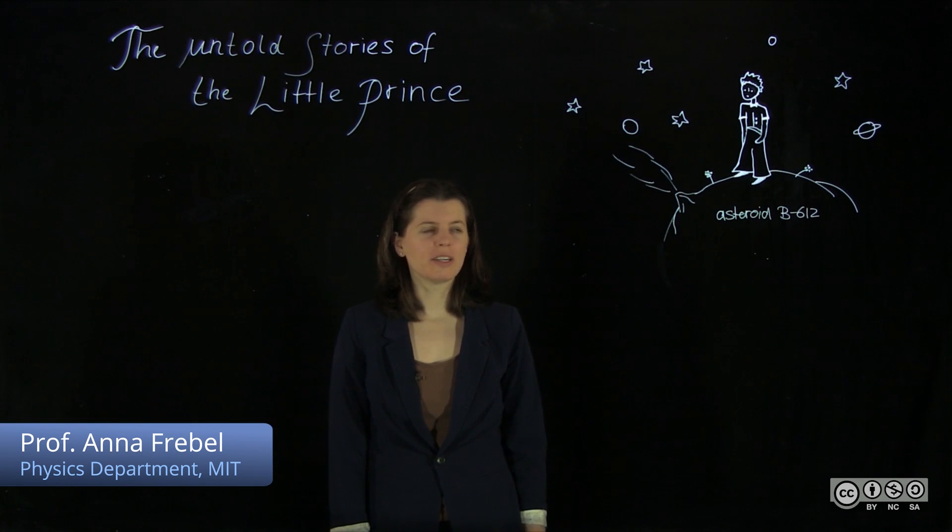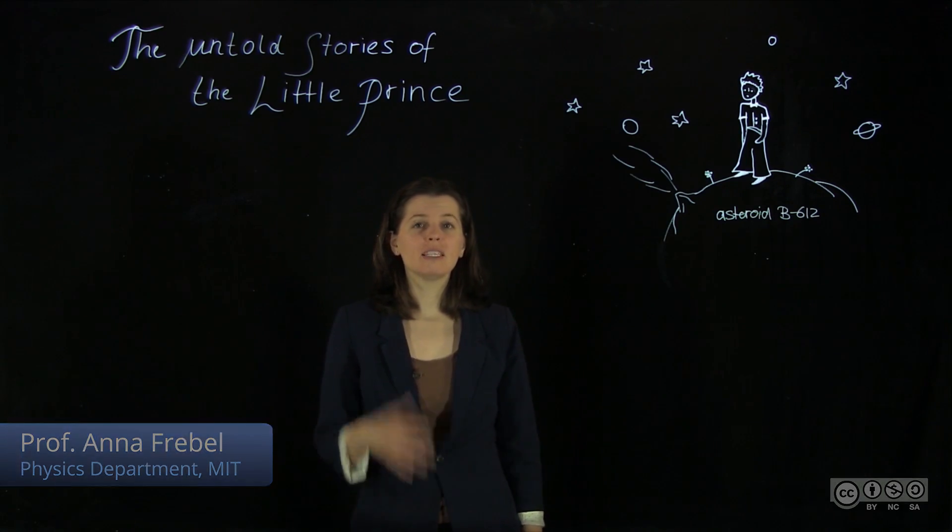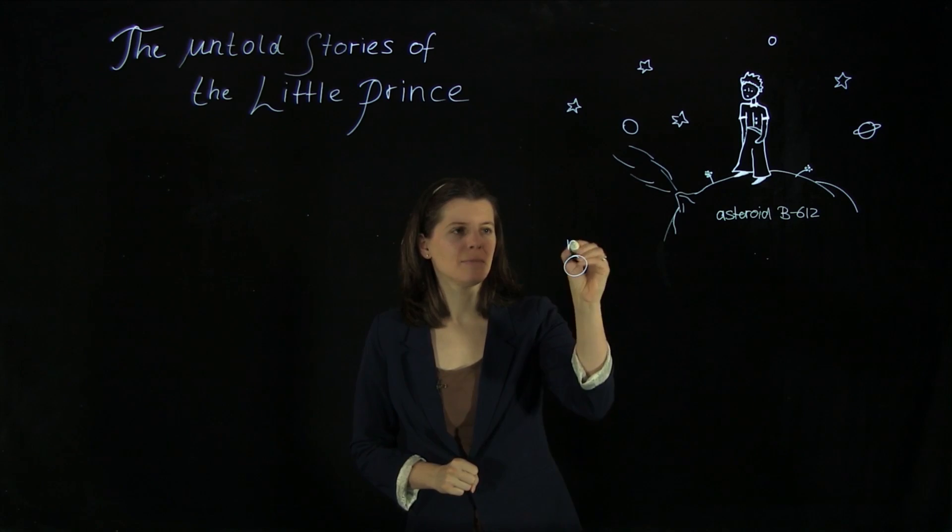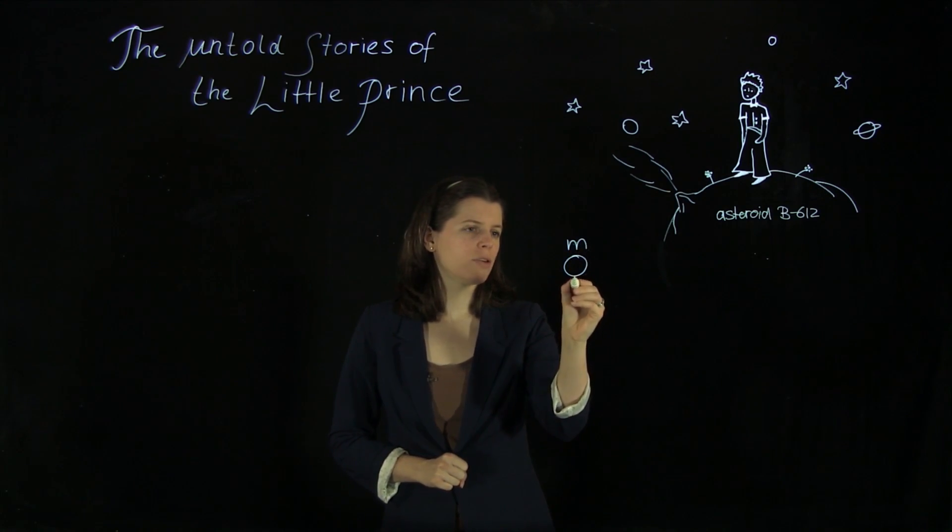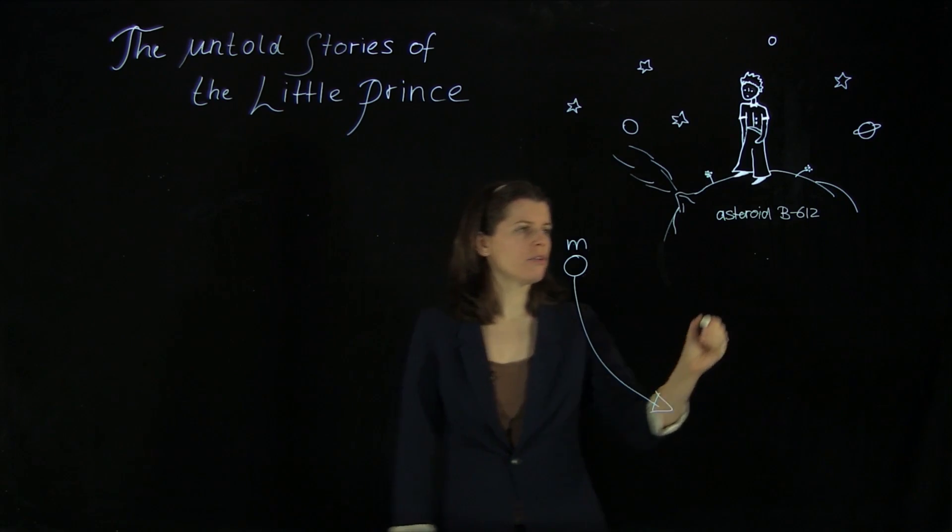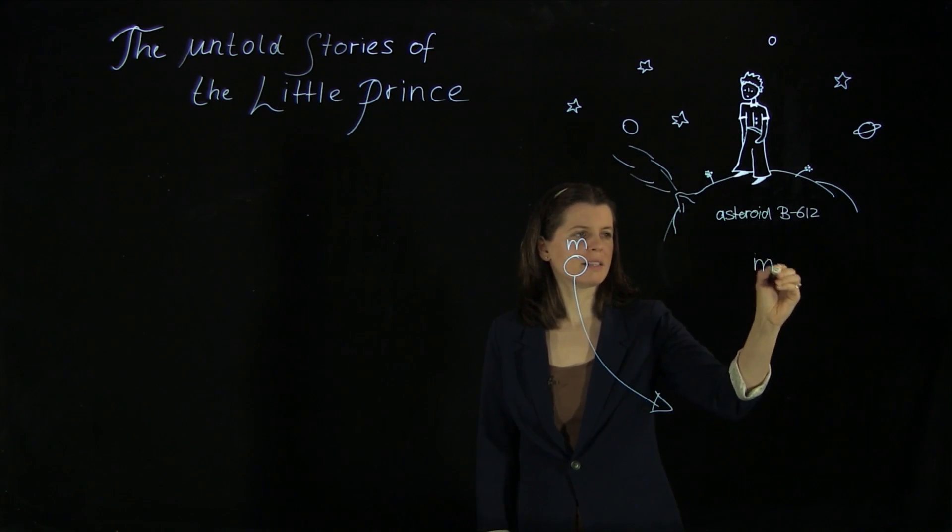The Little Prince's asteroid, B612, is being orbited by a small body. It has a mass m and it goes around this asteroid B612 that has a mass m1.